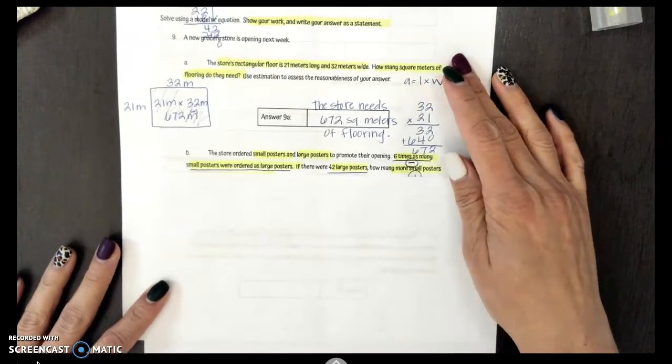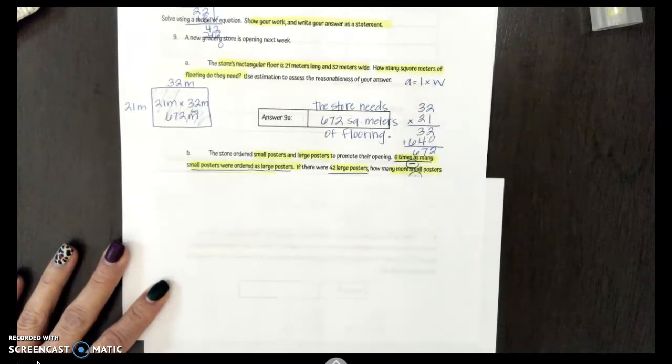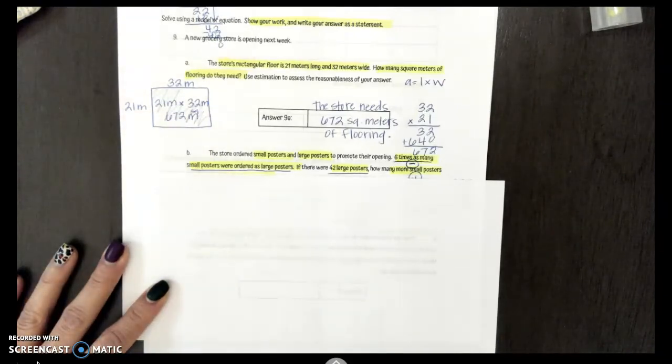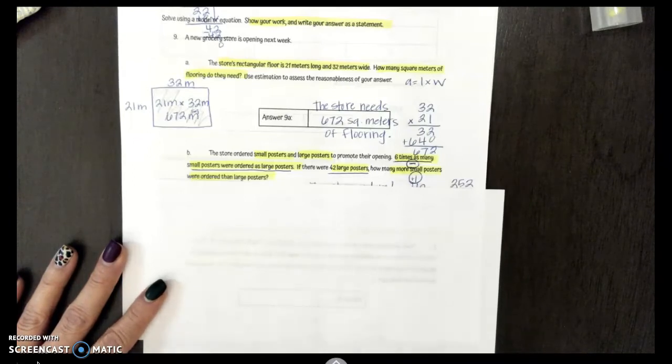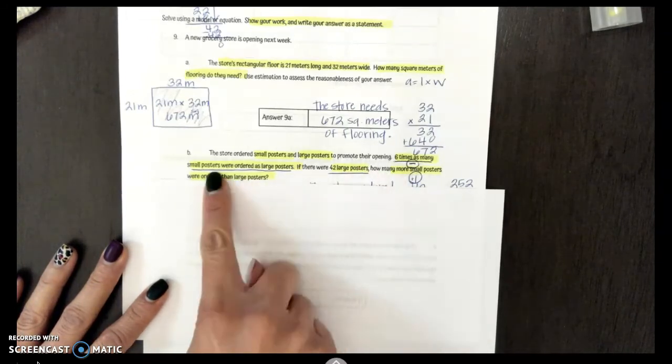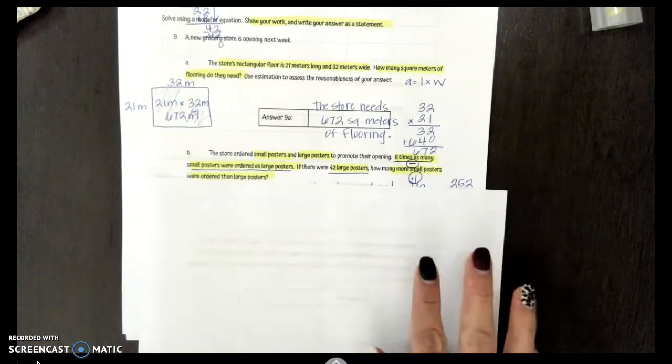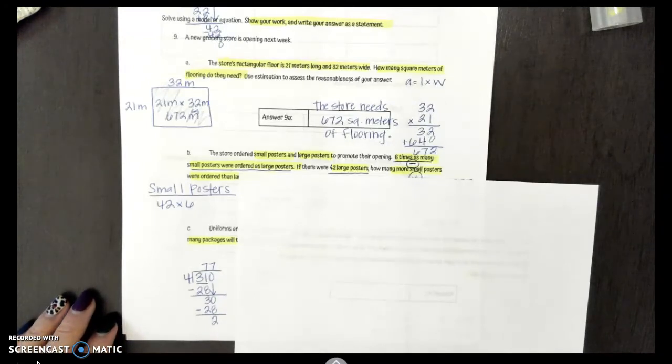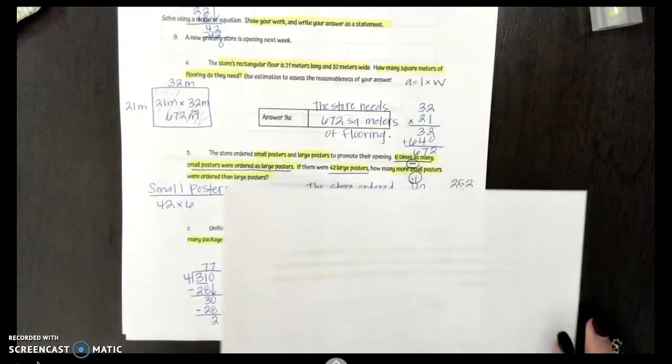Let's take a look at the next one. The store ordered small posters and large posters to promote their opening. 6 times as many small posters were ordered as large posters. If there were 42 large posters, how many more small posters were ordered than large posters? So I know they ordered 42 large posters and I know that they ordered 6 times as many smaller posters. So all I need to do is set up my equation as small posters is 42 times 6. You can solve it any way you would like. You can stack it like a Pringle. You can use a place value chart. Whatever it is you need to do.